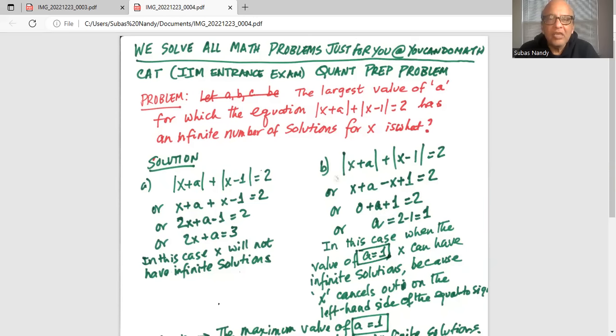The largest value of a for which the equation |x+a| + |x-1| = 2 has an infinite number of solutions for x is what? So we are looking for the largest value of a.